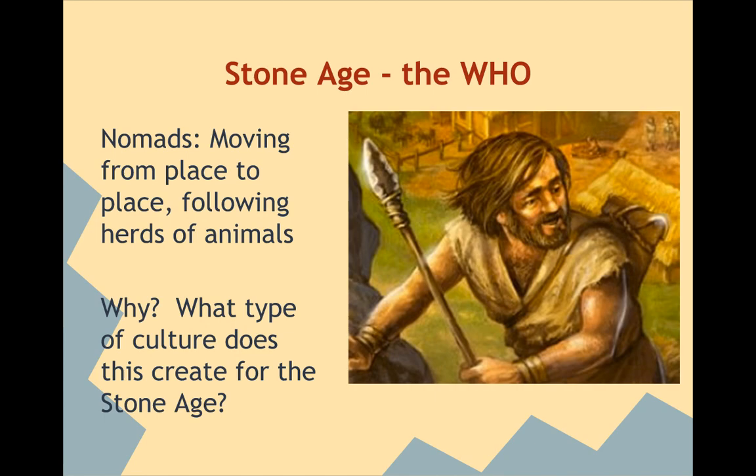Prior to the development of civilization, we were in what was known as the Stone Age — the Paleolithic, Mesolithic, and Neolithic eras. People during this time are going to be nomads, moving from place to place in search of food. They're going to follow herds of animals and forage for other food sources: plants, grains, and berries.